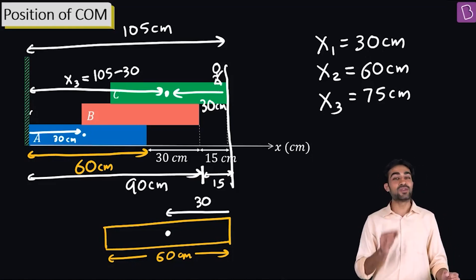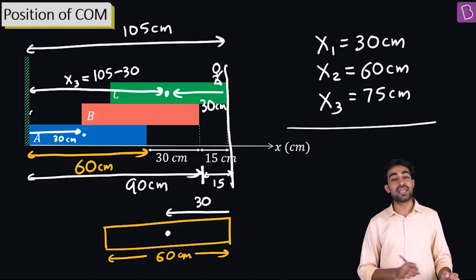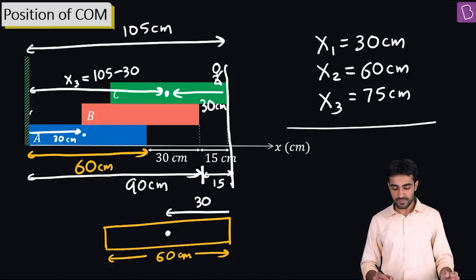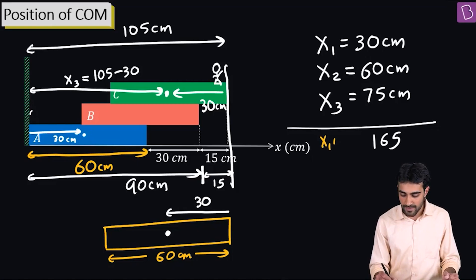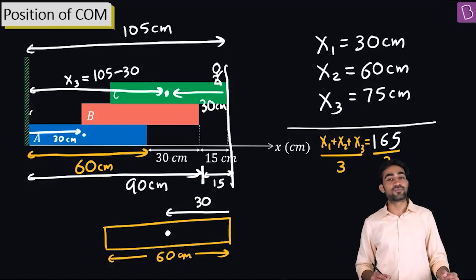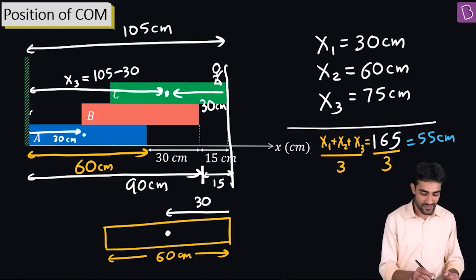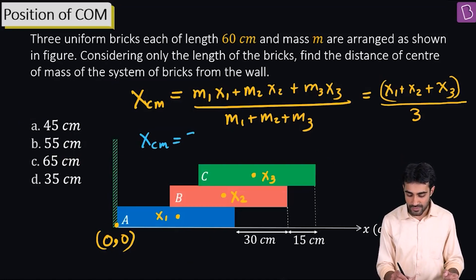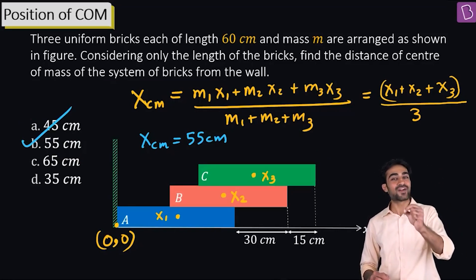Now we know x1 = 30, x2 = 60, x3 = 75. Their sum is 30 + 60 + 75 = 165. Dividing by 3 gives x_cm = 55 cm. So the center of mass of the entire system is 55 cm from the wall, and option B is the correct answer.